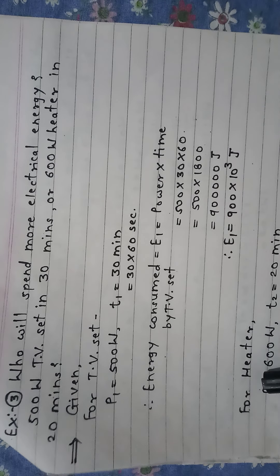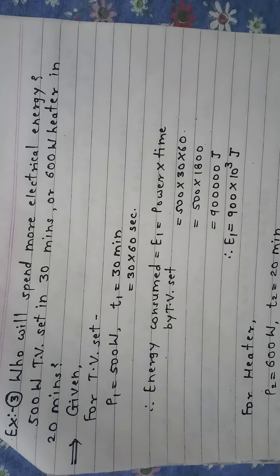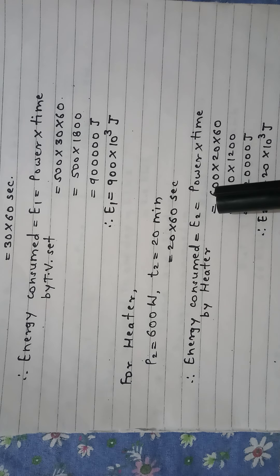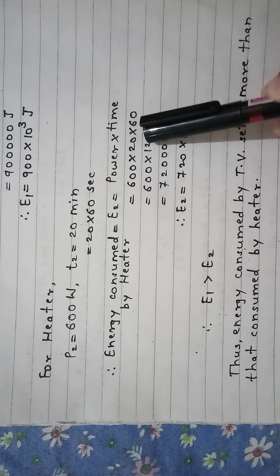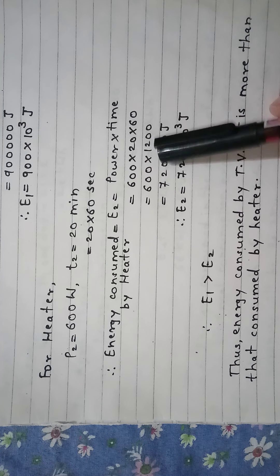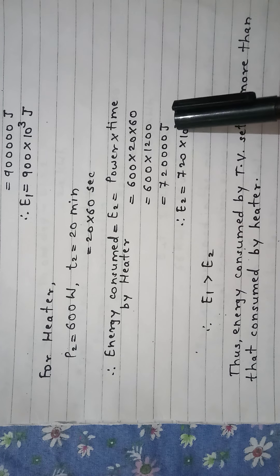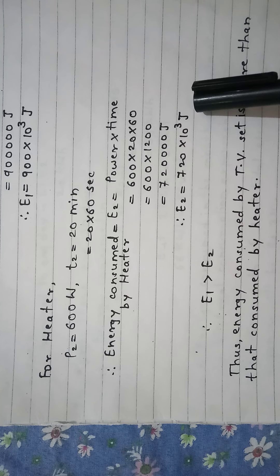Now for the heater: P2 is equal to 600 Watt, T2 is equal to 20 minutes, that is equal to 20 into 60 seconds. Therefore energy consumed by heater E2 is equal to power into time, so 600 into 20 into 60, that is equal to 600 into 1200, that is equal to 720,000 Joule. Therefore E2 is equal to 720 into 10 raised to 3 Joule.